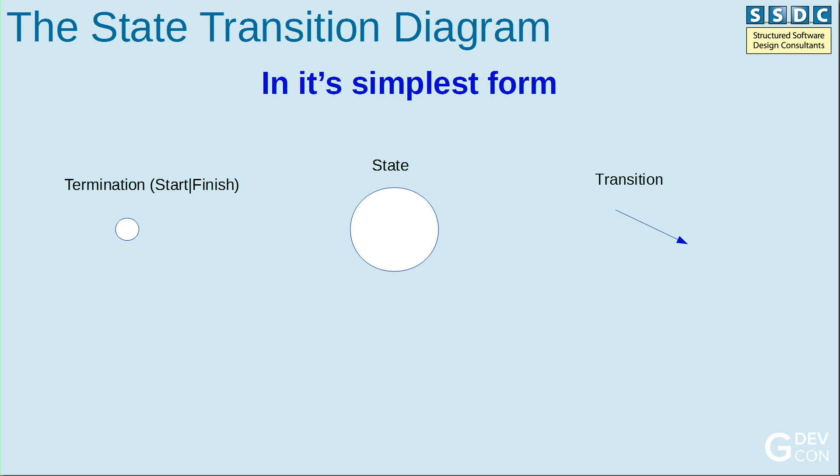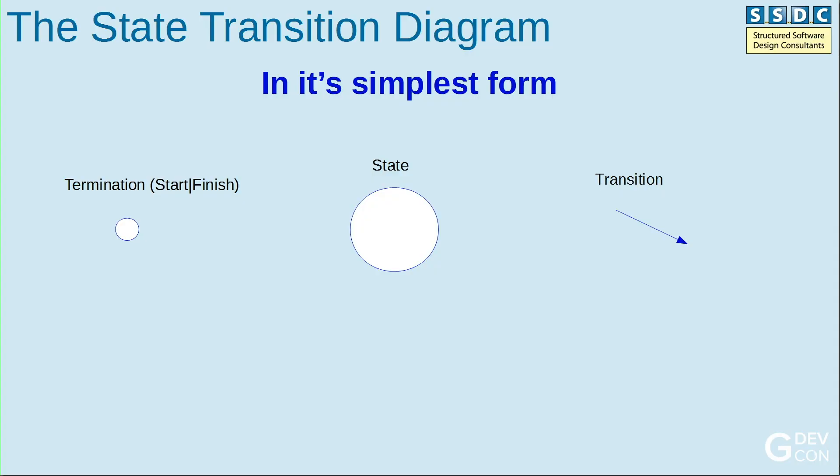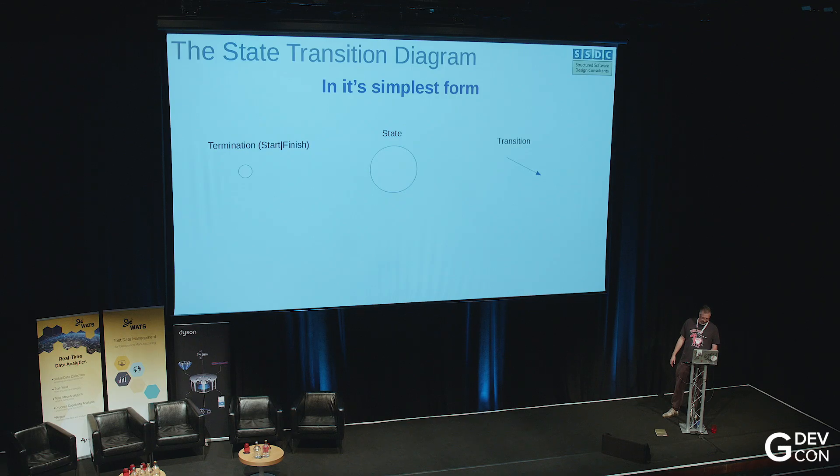I don't want to get into complex stuff - if I have to learn more than three things, I'll get bored. So my state machines have a termination, a state, and a transition. That's it. The point of having a diagrammatic language is purely so you can show that diagram to people who don't care about diagrammatic languages, or just to make your headspace a little bit easier. Do what works for you.